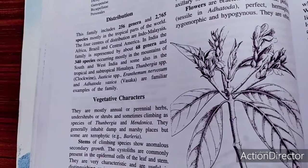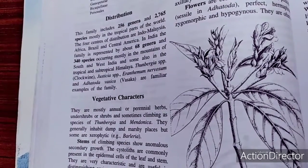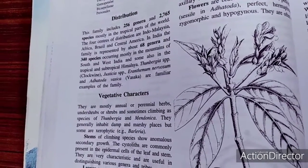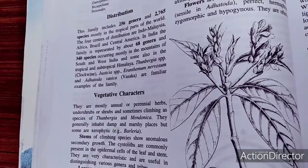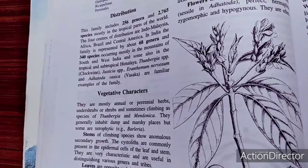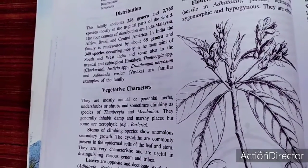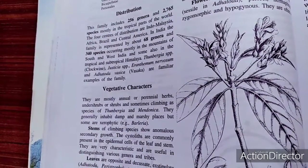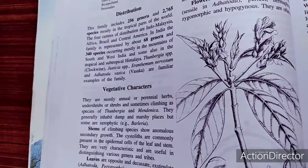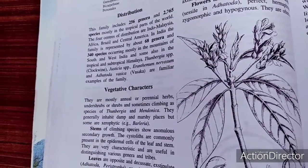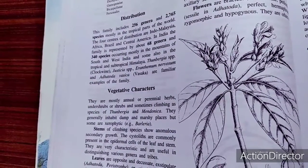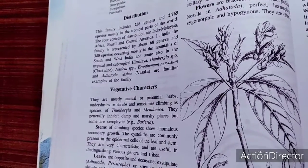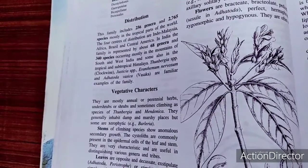This family is found in Africa, Brazil, Central America, and Indo-Malaysia. 256 genera and 2765 species have been recognized. Interesting features include inflorescences that are racemose or cymose, herbaceous or shrubby plants with branches swollen at the nodes. Leaves are simple, opposite, exstipulate. Flowers are zygomorphic, bisexual, with bracts, and petals are bilabiate.